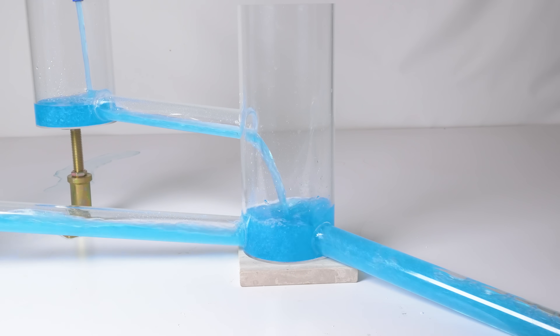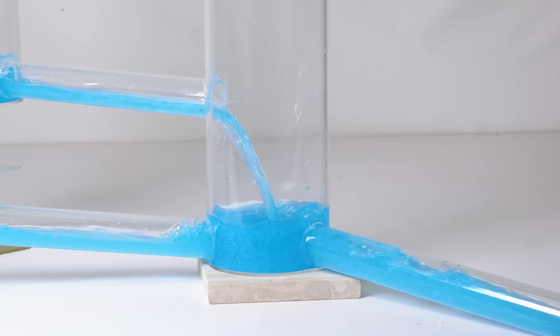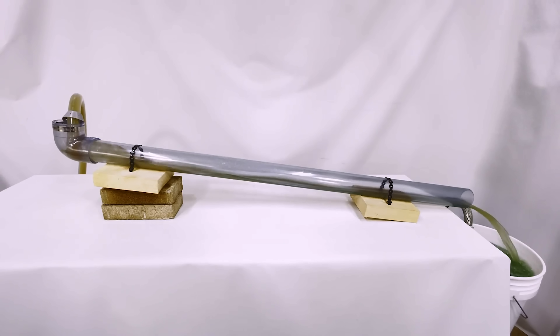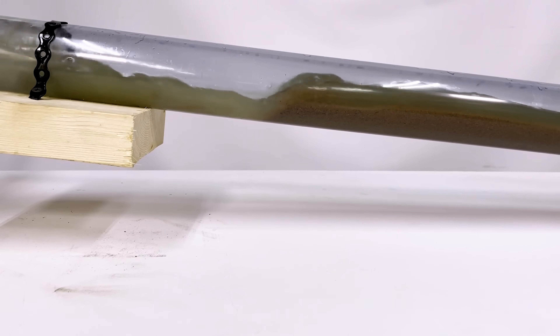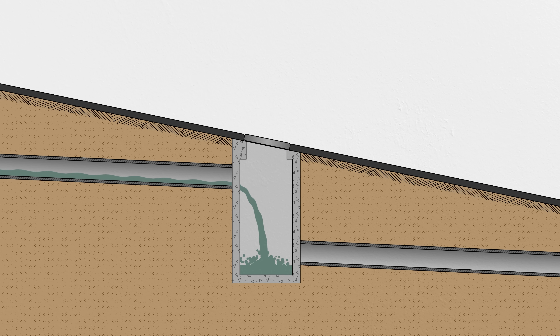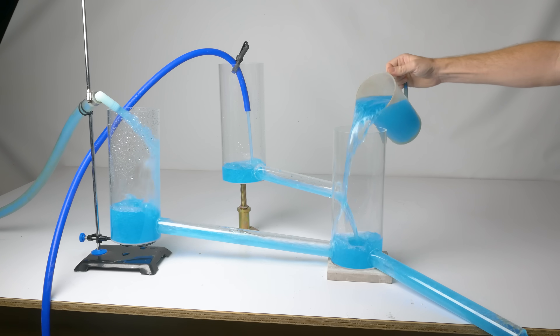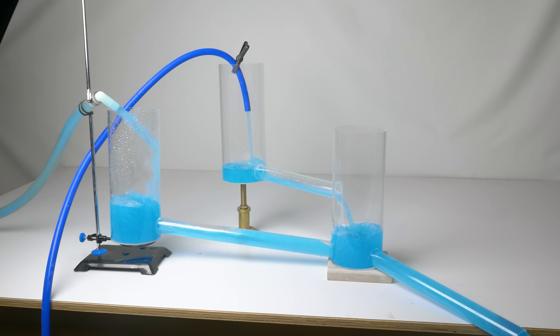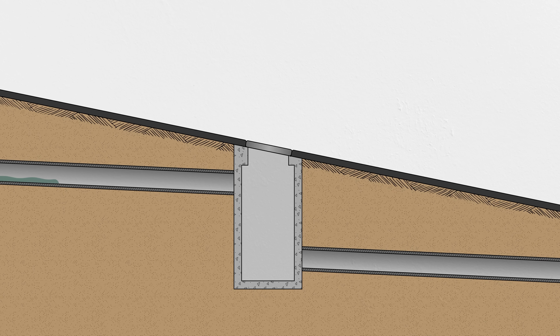Another thing this model shows is that not all pipes have to come in at the bottom. They call this a drop manhole when one of the inlets is a lot higher than the outlet. The slope of a sewer line is pretty important — there's a minimum slope to get good flow, but you don't want too much slope either. Wastewater often carries rocks and grit, so if it gets going too quickly, it can wear away or damage the pipes. So if you're running a line along a steep slope, sometimes it's better design to let some of that fall happen in a manhole rather than along the pipe. Most drop manholes use pipes or other structures to gently transition inlet flow down to the bottom.